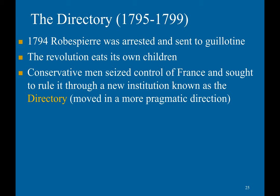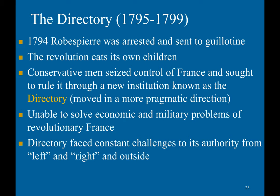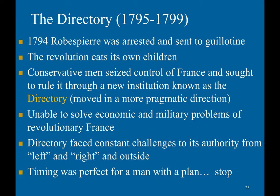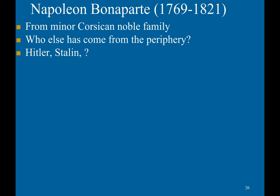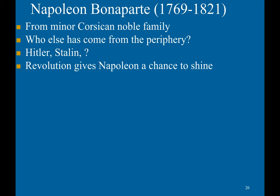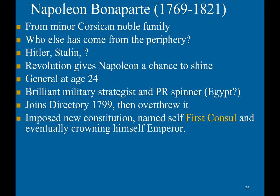Conservative men seized control of France and sought to rule through a new institution known as the Directory. However, they were unable to resolve the economic and military problems of France. The Directory faced constant challenges to its authority from both liberals and conservatives and outside forces — basically perfect timing for a man with a plan. That man is Napoleon Bonaparte. He was from a minor Corsican noble family — like many important figures, he came from the periphery. The revolution gave Napoleon a chance to shine; he became a general at age 24 and rose to become a brilliant military strategist. He joined the Directory in 1799 and then overthrew it, imposing a new constitution and naming himself First Consul, eventually crowning himself Emperor.